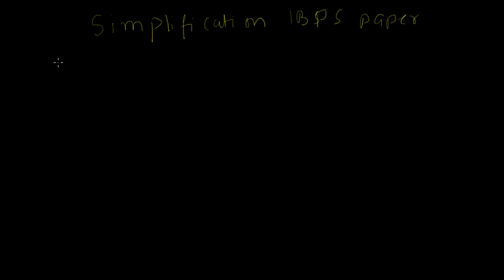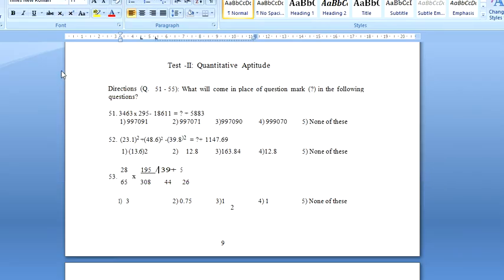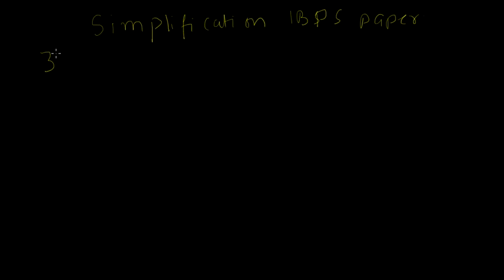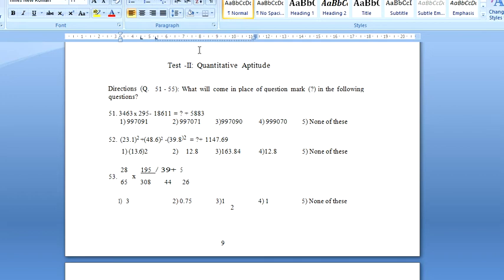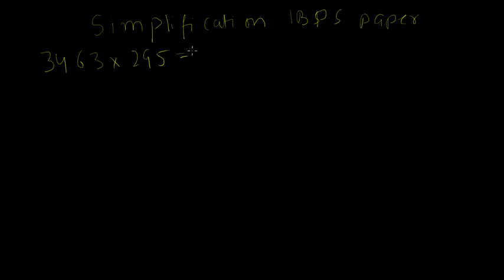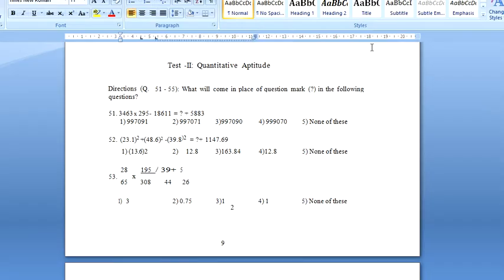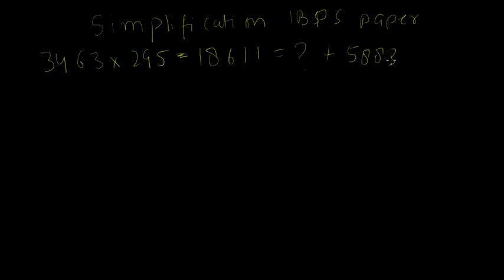The question reads 3463 into 295 minus 18611 is equal to question mark plus 5883. To solve these type of questions, what we need to do is first of all apply BODMAS rule. So we'll first multiply 3463 into 295.